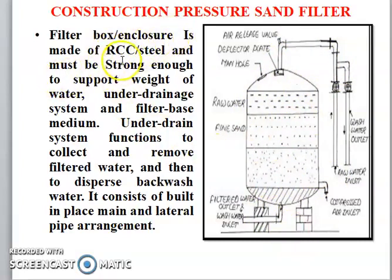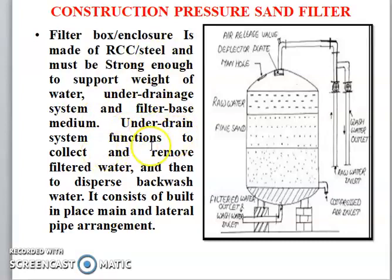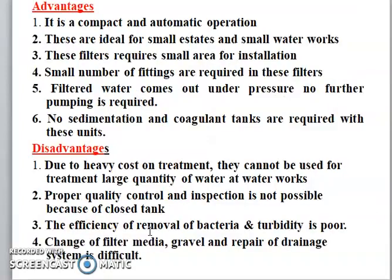The filter box enclosure is made of RCC or steel; it must be strong enough to support the weight of the water. The under-drain system functions to collect and remove the filtered water and the backwash water. It consists of a built-up manifold main and lateral pipe arrangement.